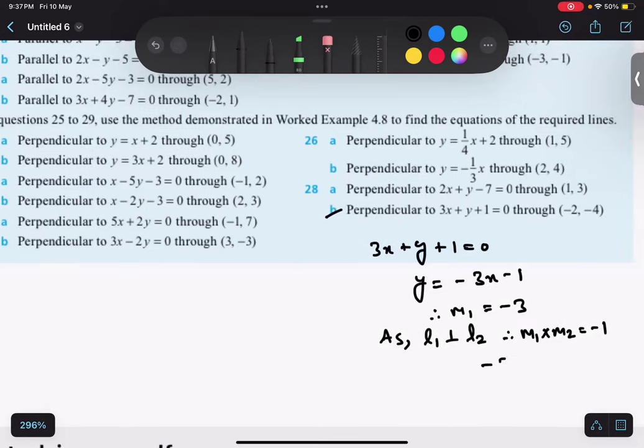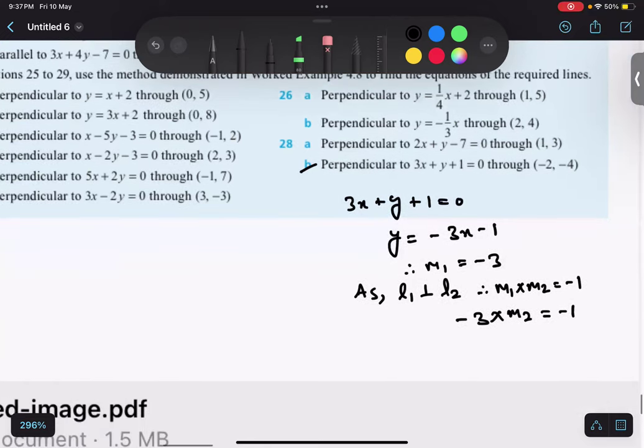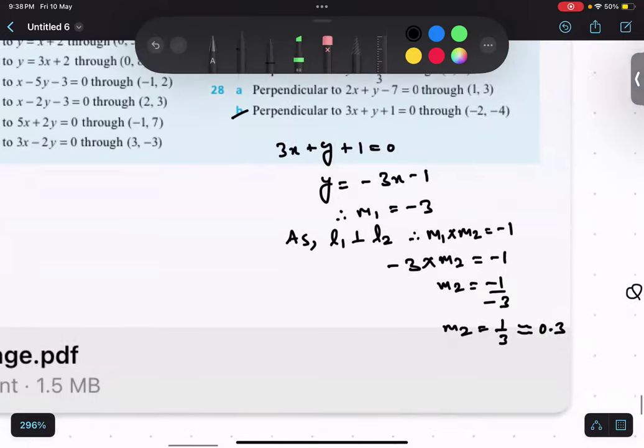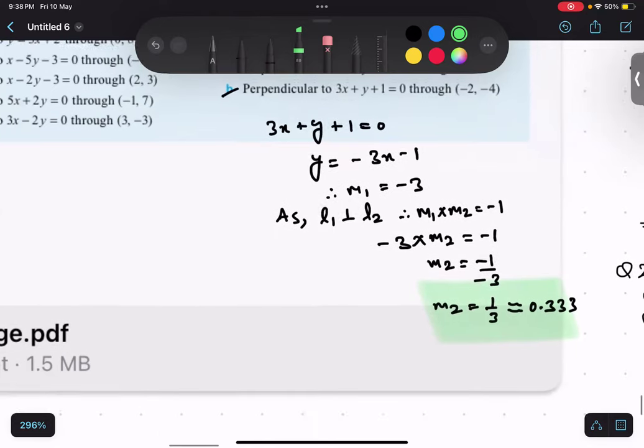We know this thing already. So, m1 value is minus 3, m2 we have to find. So, m2 equals to minus 1 divided by minus 3. m2 value is 1 upon 3, which you have taken 0.333. Yes, that is correct. But ideally, we should take 1 upon 3. But it is absolutely fine.